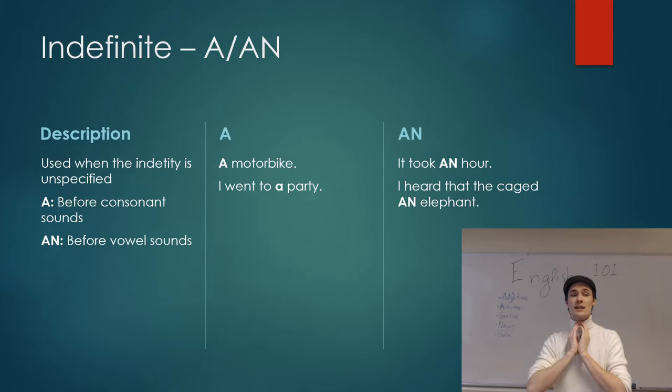Then we move on to the indefinite. Looking at the description here, it is used when the identity is unspecified, when we're not entirely sure what's going on or what we're directing towards. So you use 'a' before a consonant sound and 'an' before a vowel sound.